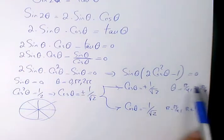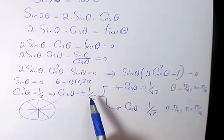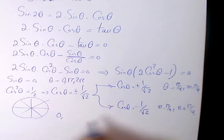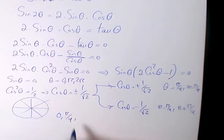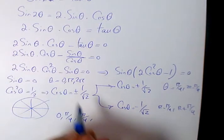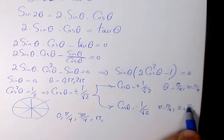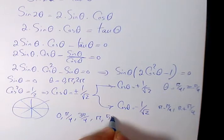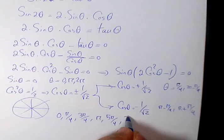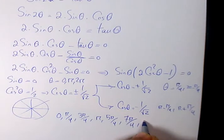So we have four answers here and three answers here, so we have seven answers. The first one is 0, then we have π/4, then we have π - π/4, which is 3π/4, then we have π, then we have π + π/4, which is 5π/4, then we have 2π - π/4, which will be 7π/4, and then 2π.